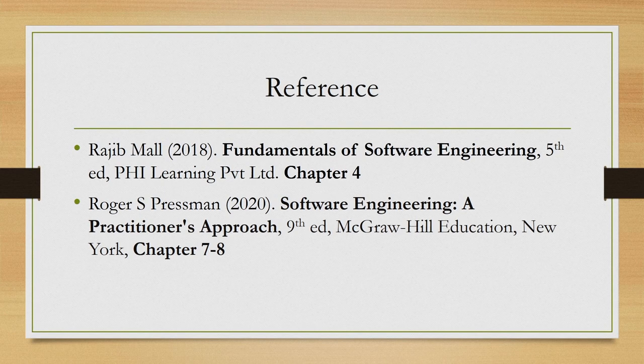Whatever I have discussed today can be found in these books. For further details you can refer to chapter 4 of the first book and chapters 7 to 8 of the second book. With that we conclude today's lecture. I hope you have got some idea of what we meant by functional requirements and how to represent them — both visually as well as formally in textual format in the form of an SRS document. In subsequent lectures we shall see how usability requirements can be incorporated in the form of functions in functional requirements so that our systems can have better usability. That is all for today. See you in the next lecture. Thank you and goodbye.